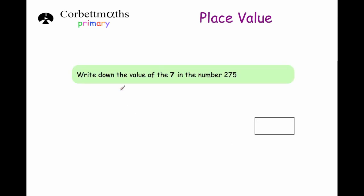Our first question says: write down the value of the digit 7 in the number 275. The 2 is in the hundreds column, the 7 is in the tens column and the 5 is in the units column. So the 7 represents 70 — 7 tens. So we're going to write down 70.